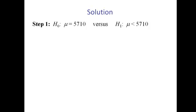First, let's set up our hypotheses. So we're going to test H0: μ = 5710 kilojoules per day versus the alternative H1: μ < 5710 kilojoules per day.